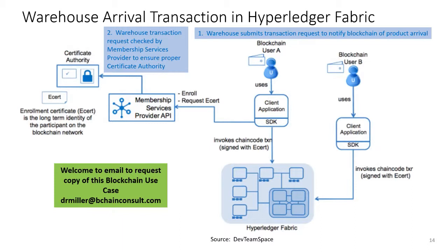In Hyperledger Fabric, there's a certificate authority process — you can't interact with the permissioned blockchain unless you're pre-approved. The certificate authority process, sometimes handled by a membership service provider, verifies that a blockchain transaction proposal is from a certified user, so unauthorized nodes can't submit or process information on your private blockchain system. When the blockchain receives a correctly formatted transaction request, the membership service provider checks that the warehouse is a permissioned user with valid certificate authorities specifying its specific powers to transact.